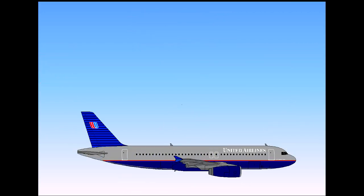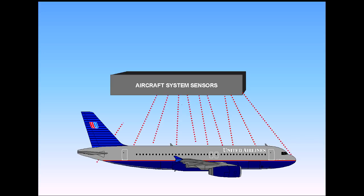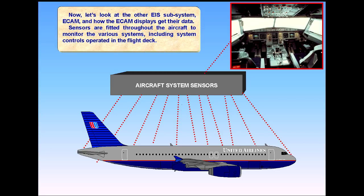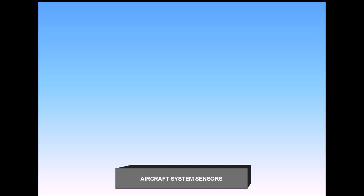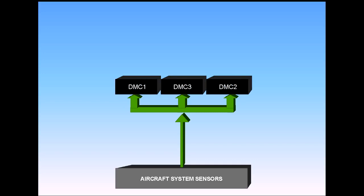Now let's look at the other EIS subsystem, ECAM, and how the ECAM displays get their data. Sensors are fitted throughout the aircraft to monitor the various systems, including system controls operated on the flight deck. Data for certain parameters — for example, fuel quantity and primary engine indications — is routed directly from the system sensors to the three DMCs.